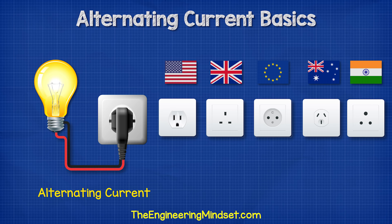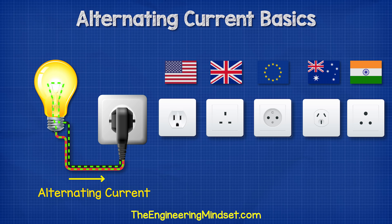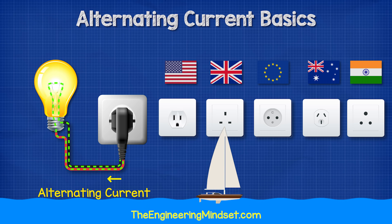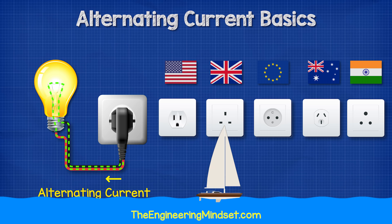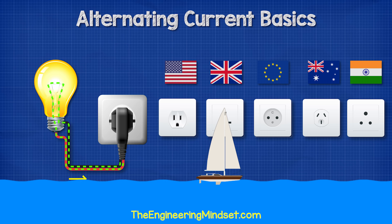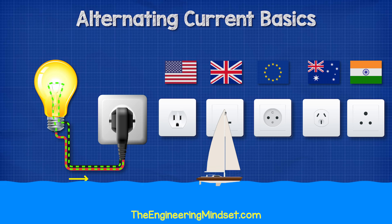With AC electricity, the electrons alternate by flowing forwards and backwards constantly. That's how it gets its name, because the current of electrons alternates in direction. You can think of this type of electricity like the tide of the sea — it constantly flows in and out between the maximums of high tide and low tide.